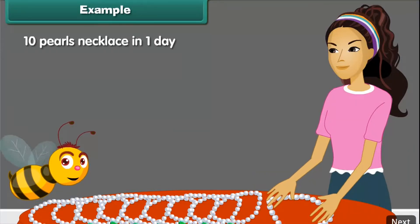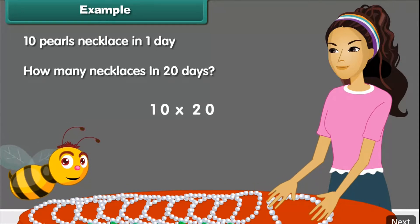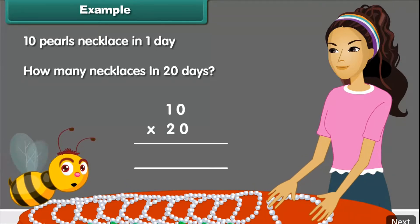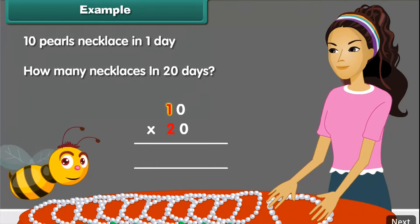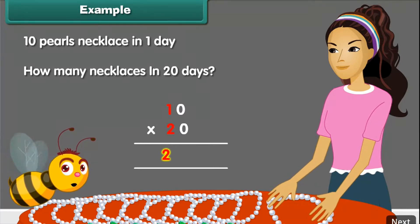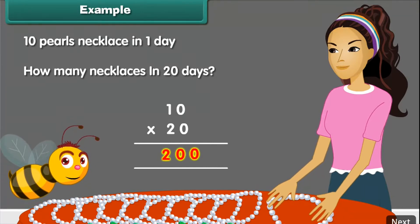Dinah makes 10 pearl necklaces in one day. In 20 days, she will make how many necklaces? We need to multiply 10 with 20. Step 1: multiply the numerals without zeros — 2 multiplied by 1 is equal to 2. Step 2: count and add the number of zeros to the right side of the answer. In this case, we have two zeros. Thus, the final answer becomes 200.